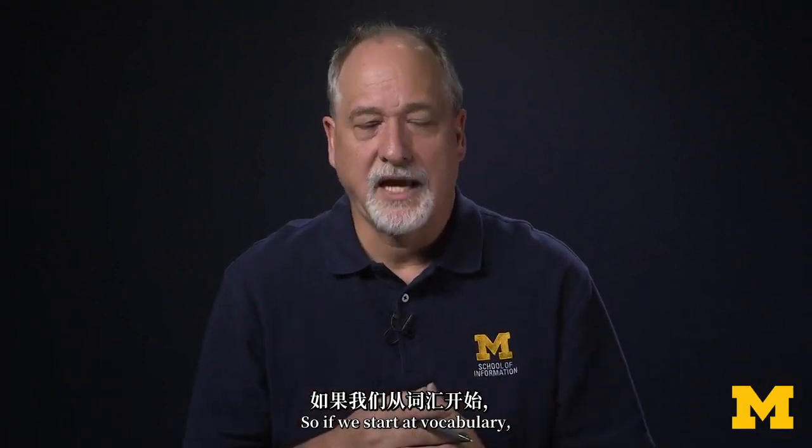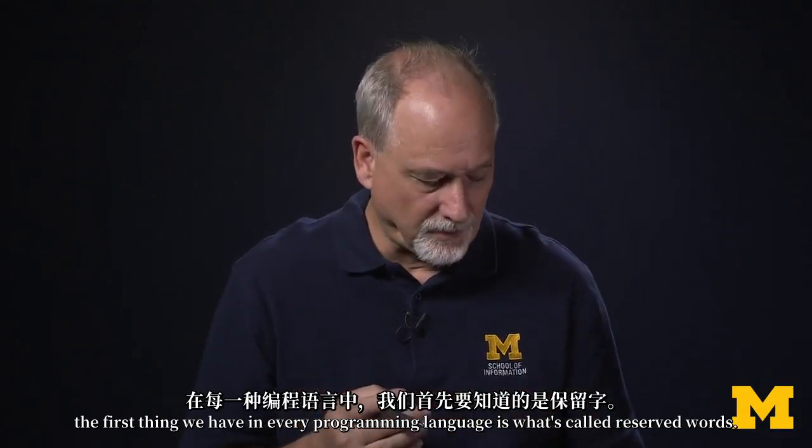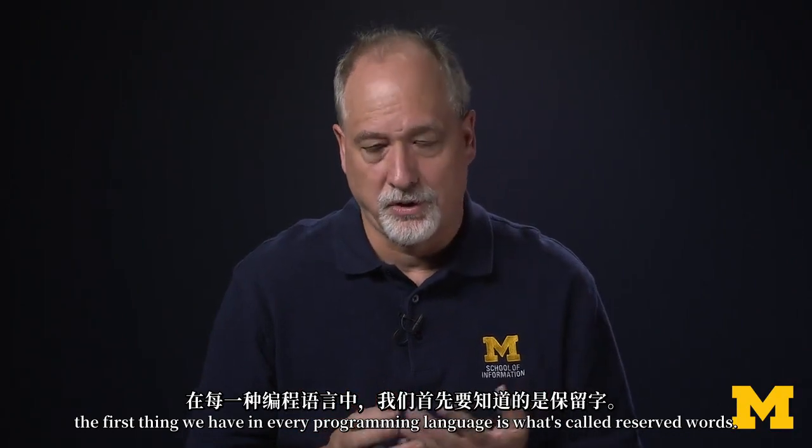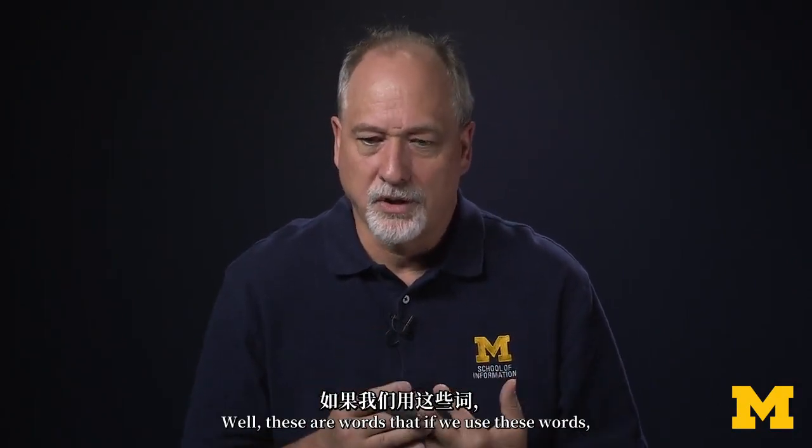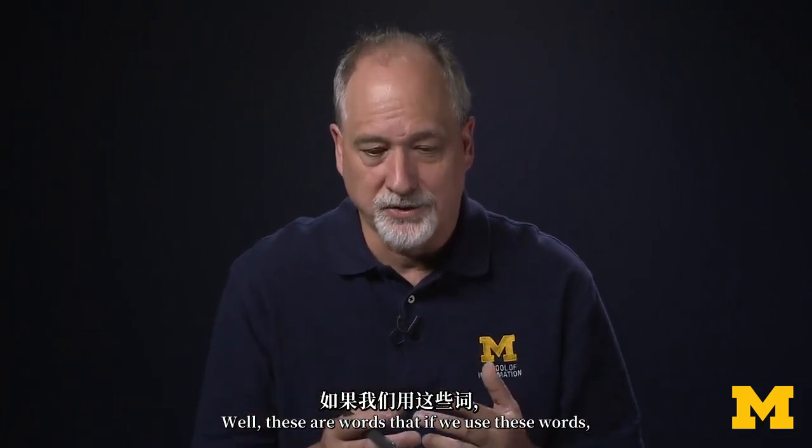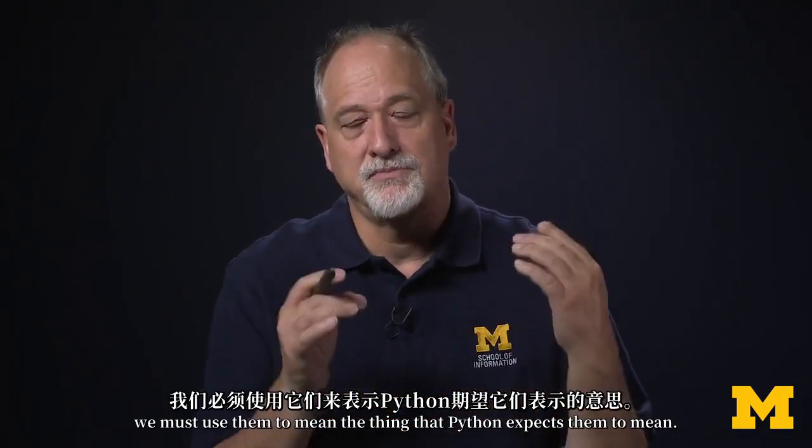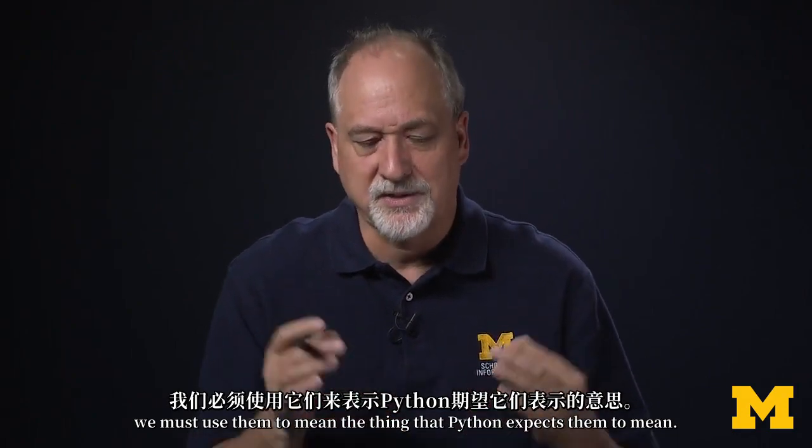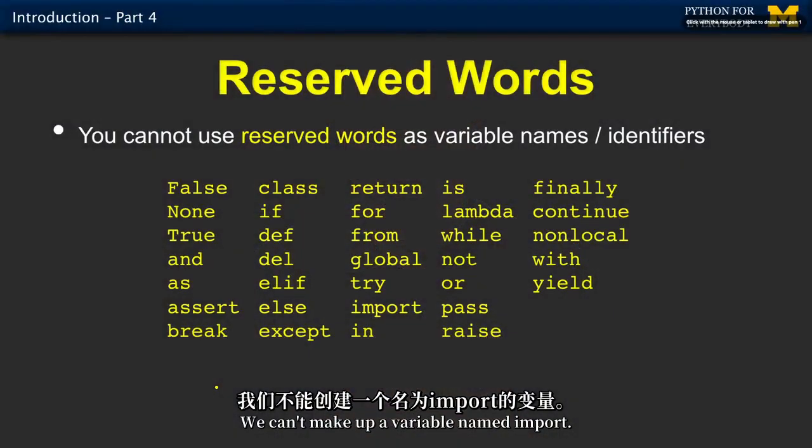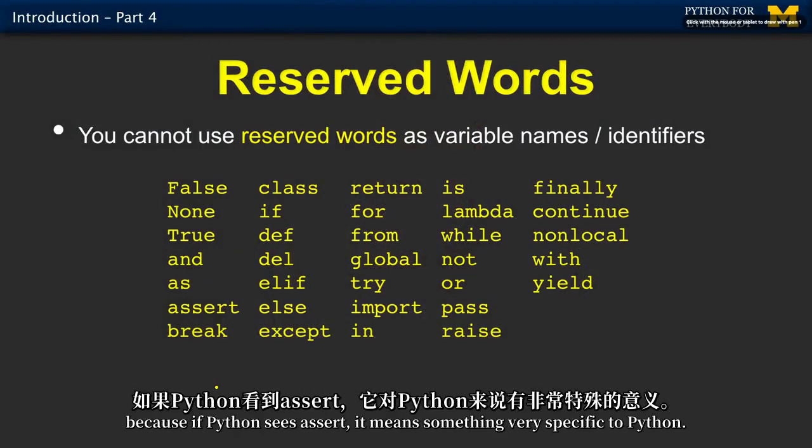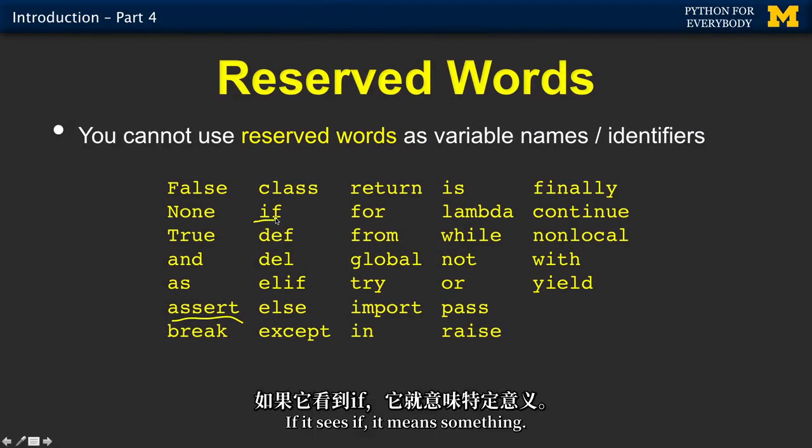If we start at vocabulary, the first thing we have in every programming language is reserved words. These are words that if we use them, we must use them to mean the thing that Python expects them to mean. We can't use them elsewhere. We can't make up a variable named import or assert. Because if Python sees assert, it means something very specific to Python. If it sees if, for, pass, or while, these mean things.